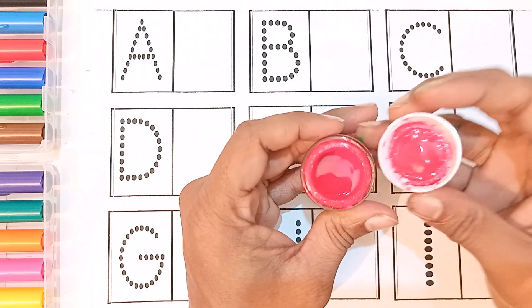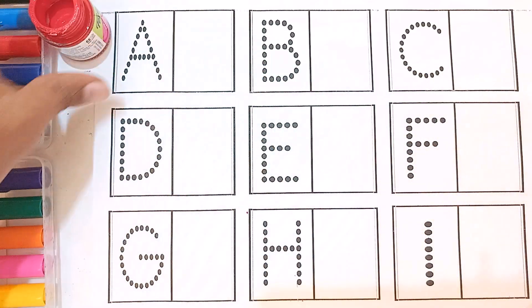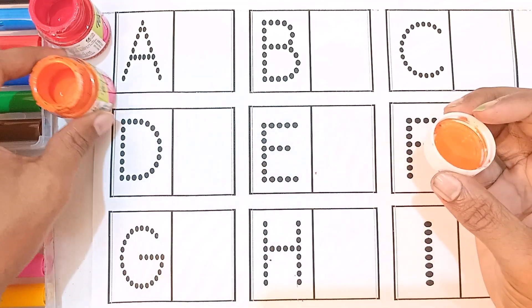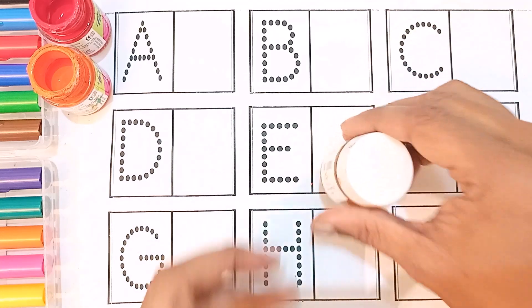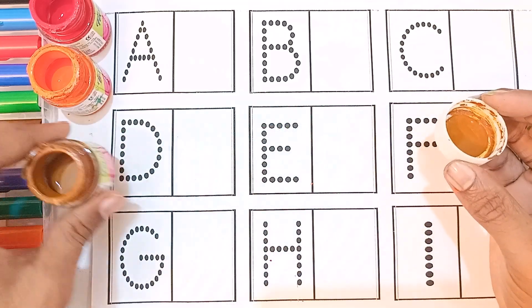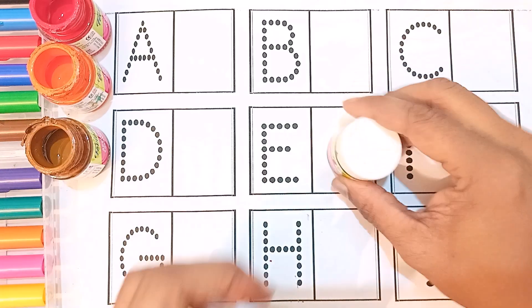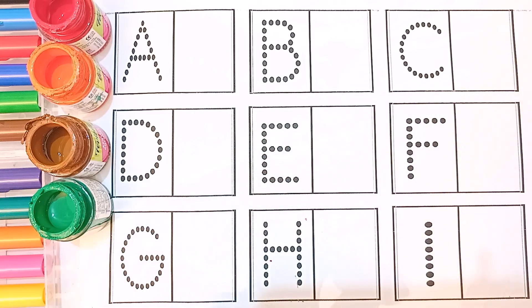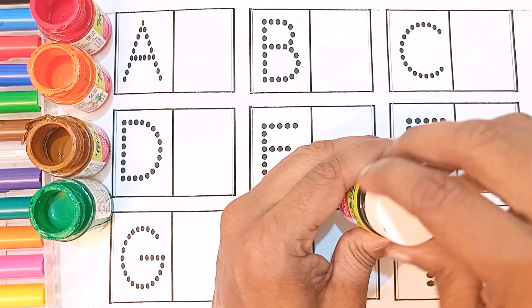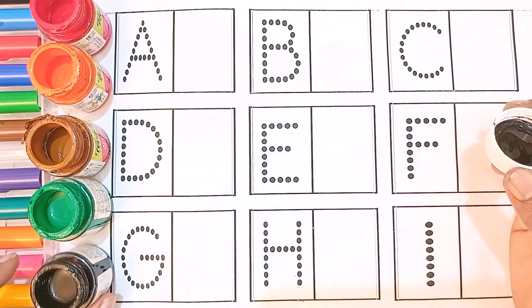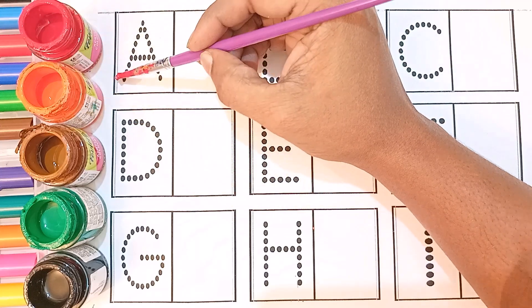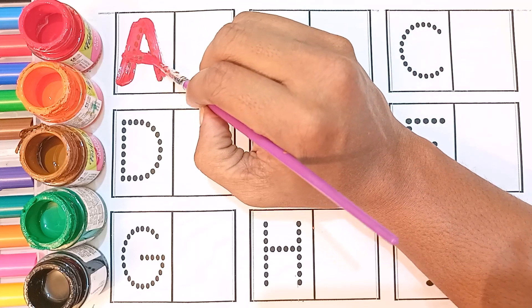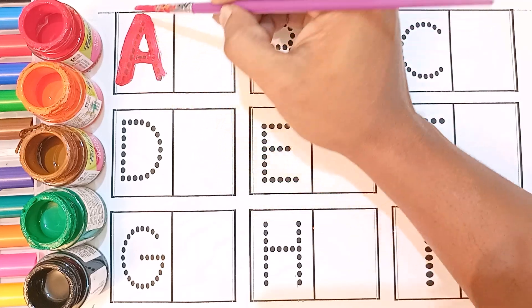Red color. Orange color. Brown color. Green color. Black color. Red color. A for apple.